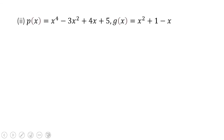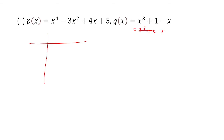This is the next question given to us. It follows the same procedure. I'll rearrange this as x squared minus x plus 1, just to make it easier, writing the variables from highest to lowest order. The divisor is x squared minus x plus 1, and the dividend is x to the power 4 minus 3x squared plus 4x plus 5.